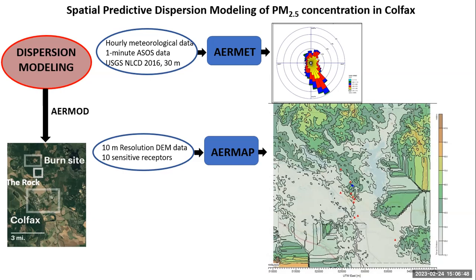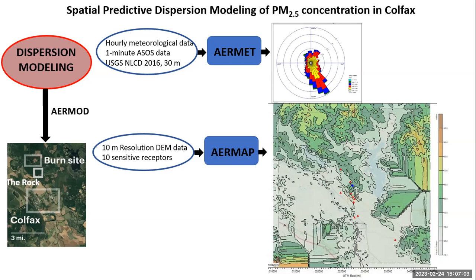The small blue point represents the emission source — the burn facility in Colfax. The red dots are the sensitive receptors on the facility.